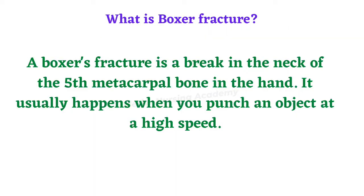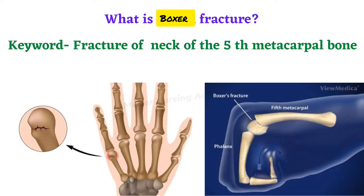Boxer fracture is a break in the neck of the fifth metacarpal bone in the hand. It usually happens when you punch an object at high speed, causing the neck of the fifth metacarpal bone to fracture. You can see in the image the fracture clearly at the neck of the fifth metacarpal bone. This type of fracture is called boxer fracture.